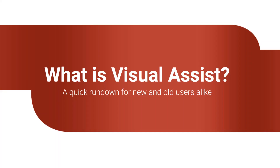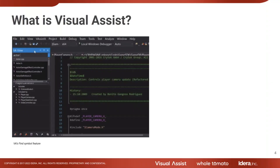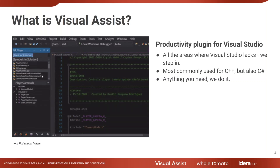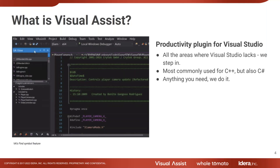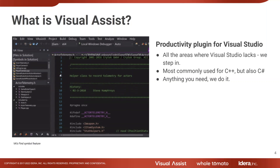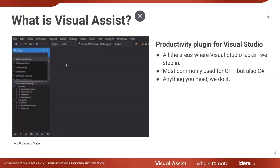We're going to go through a basic rundown of some of the high-level features that we offer, why people use the product, how to access the features, and what Visual Assist is. We want to put something in this for everyone — if you're new to the product or if you've seen it before. Hopefully by the end of this, you'll have learned a few new features or new ways of accessing them, because we have quite a few of them.